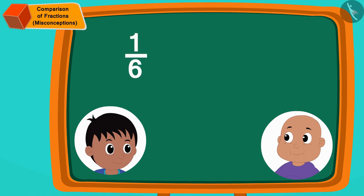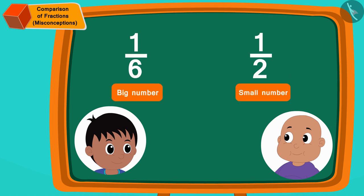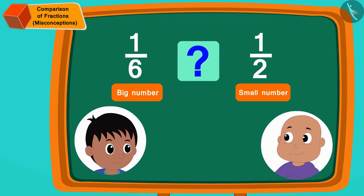Now Rajoo once again started teasing Babloo, saying that he got one-sixth part of the sandwich and Babloo got one-half part, and because six is a larger number than two, he got a larger portion of the sandwich. Children, is Rajoo's statement correct?